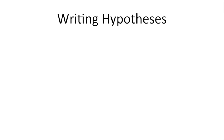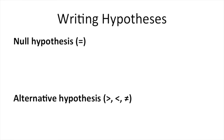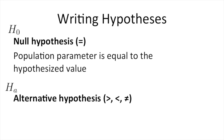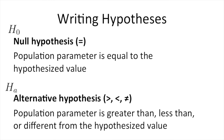The first step, before even running the randomization test, is to write your hypotheses — a null hypothesis and an alternative hypothesis. The null hypothesis, H-sub-O, always contains an equality. The alternative hypothesis, H-sub-A, sometimes written as H-subscript-1, will never contain an equality; it will contain greater than, less than, or not equal to. In the null hypothesis, the population parameter equals the hypothesized value. The research question is typically stated in terms of the alternative hypothesis, where the population parameter is greater than, less than, or different from a hypothesized value.